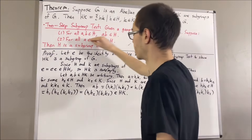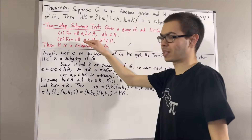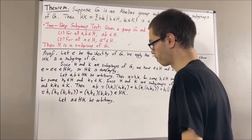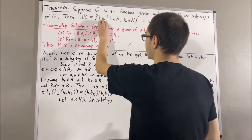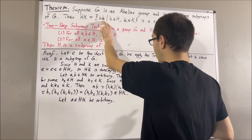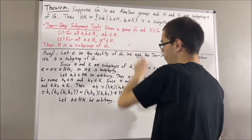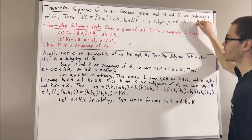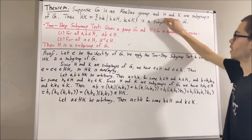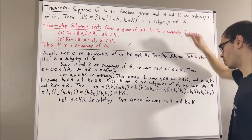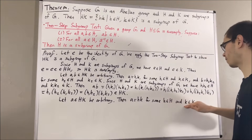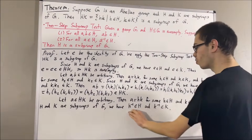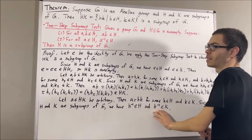Now let's show the second condition is true. To prove the second condition, let's give ourselves an arbitrary element a in hk. The goal is to show that the inverse of a also belongs to hk. Since a is an element of hk, we can say a is equal to hk for some element h in h and some element k in k. Since h and k are subgroups of g, if you give me any element of h, its inverse must also belong to h; if you give me any element of k, its inverse must belong to k. So, in particular, the inverse of h must belong to h and the inverse of k must belong to k. This tells us that the inverse of h times the inverse of k fits the form to be an element of hk.